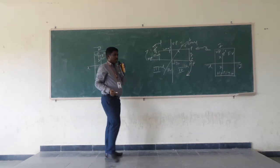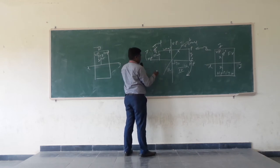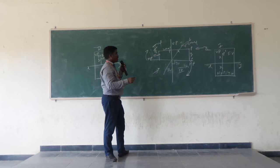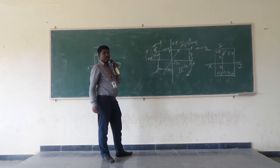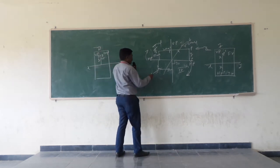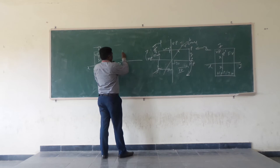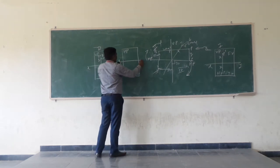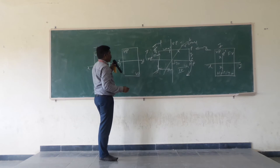Now we will see about the third quadrant. In the third quadrant, point S will be represented. When you want to see a point in the third quadrant, we will be seeing below the horizontal plane and behind the vertical plane. When you see these terms — below the horizontal plane and behind the vertical plane — it will be the third quadrant. When you rotate the horizontal plane in the clockwise direction, the horizontal plane above will come above the XY line, and the vertical plane will be coming below the XY line. The XY line will be the reference line.